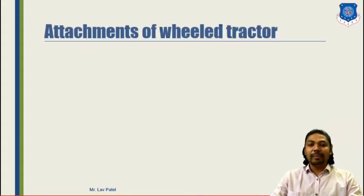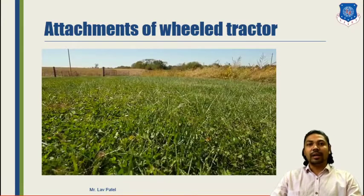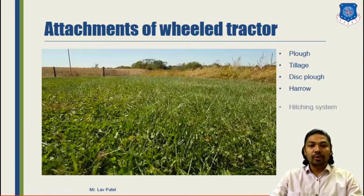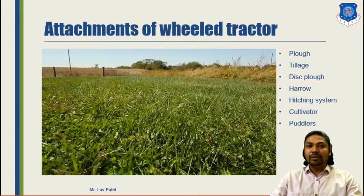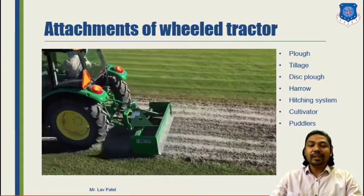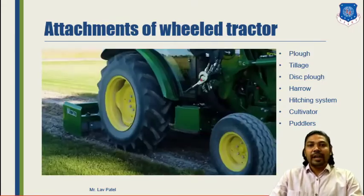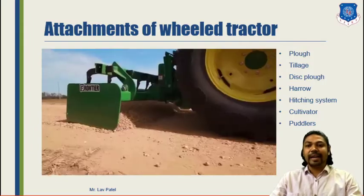Moving to the second topic — attachments of wheel tractors. There are several attachments made nowadays; some companies have made almost 30 to 40 attachments for different activities. Tasks include plowing, tillage, disc plowing, harrowing, hitching, cultivating, and puddling. These attachments can be easily attached to any type of tractor with a few screws and bolts or via a PTO shaft (power takeoff shaft).